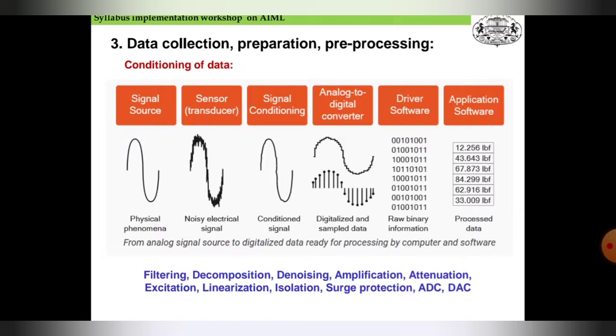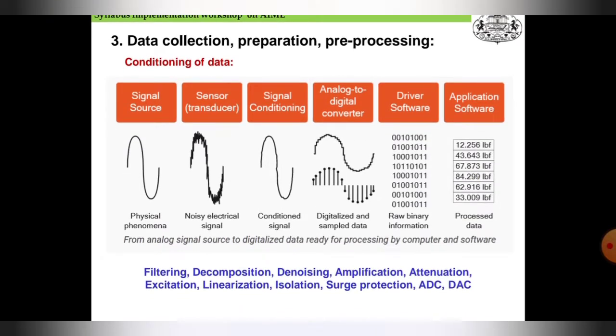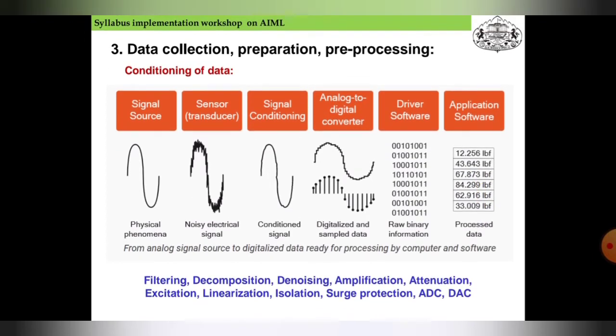With the help of software, we convert this digitalized sampled data into raw binary information so that it can be fed to the computer or application software. The processed data you can see here on the screen. Now filtering, decomposition, denoising, amplification, attenuation, excitation, linearization, isolation, surge protection, ADC, DAC - all these parameters are used for conditioning of the data.